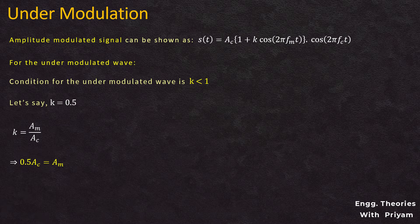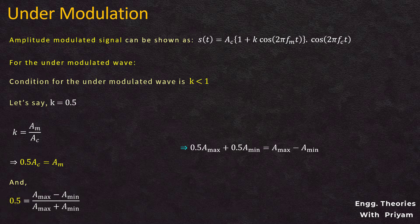We can also write 0.5 = (A_max − A_min) / (A_max + A_min). After cross-multiplication: 0.5·A_max + 0.5·A_min = A_max − A_min, which gives 1.5·A_min = 0.5·A_max, and simplifies to A_max = 3·A_min.